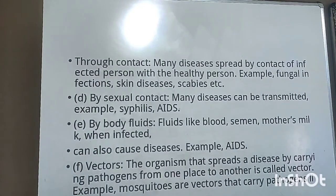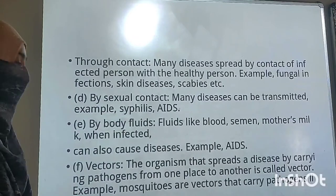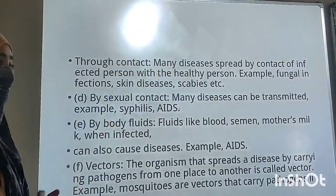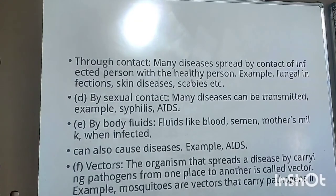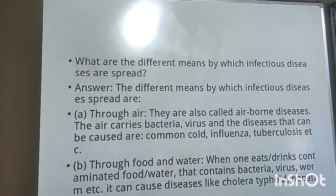The next way is through vectors. The organisms that spread a disease by carrying pathogens from one place to another are called vectors. Mosquitoes are examples of vectors. If they are asking you to explain any one or two of these ways, write a maximum of three to four sentences for each.